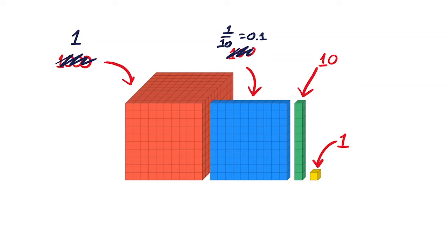We use 100 greens to form the red block, which means that the green is one one-hundredth or 0.01, and we need 1000 yellows to build the red block, which makes the yellow one one-thousandth, or 0.001.